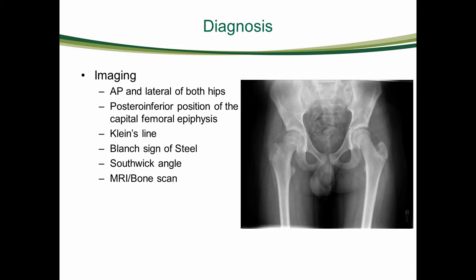Bilateral hip imaging should be reviewed. The femoral epiphysis is in a posterior inferior position relative to the femoral neck. Klein's line can be seen drawn on the superior lateral border of the femoral neck. On the left hip it intersects the epiphysis; however, on the right-sided SCFE, Klein's line passes lateral to the epiphysis. Blurring of the proximal femoral metaphysis is known as the Blanch sign of Steel, which represents overlapping double density of the metaphysis and posterior displaced epiphysis.